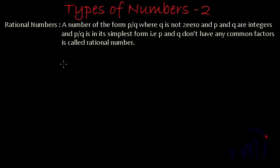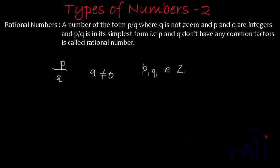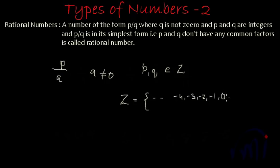It has to be denoted in the form of P by Q where Q is not equal to zero, and P and Q both actually belong to the set of integers, that means capital Z. Capital Z is the set of integers, and integers have negative numbers: minus 4, minus 3, minus 2, minus 1, and it also has 0.